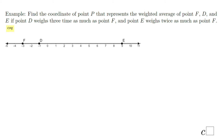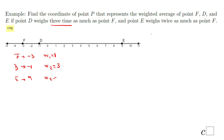Very similar: find the point P that represents the weighted average of points F, D, and E, if point D weights 3 times as much as point F and point E weights twice as much as point F. So, F is at negative 3 and it has a weight of 1. Point D is located at negative 1 and has a weight of 3. And the last one, E, is located at 9 and the weight of that point is 2 times the weight of F.